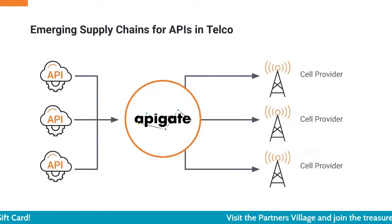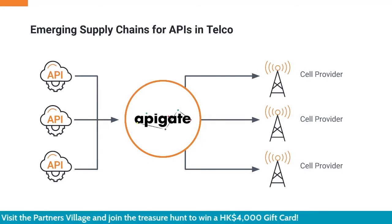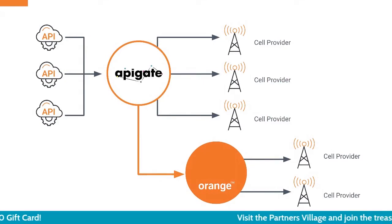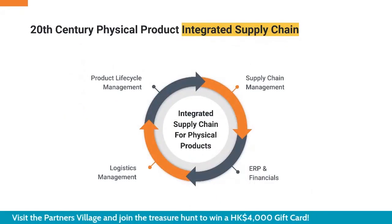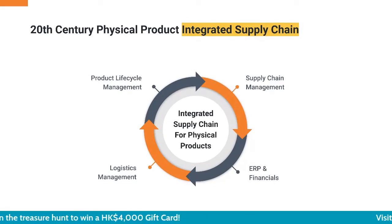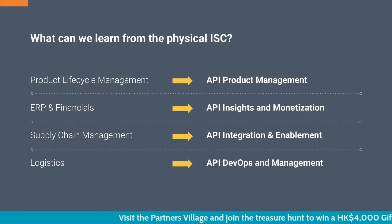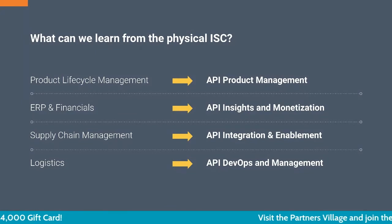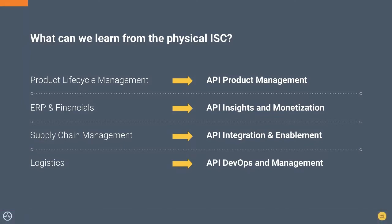Another example: one organization connecting to different cell providers from the telco industry, aggregating these APIs, and providing a new marketplace for other providers to come, consume, and build applications. This is how the physical supply chain looks, and if you map the physical supply chain to an integrated API supply chain, things inside API management — product management, monetization, integration, and DevOps — can map into the different stages of a typical physical supply chain.